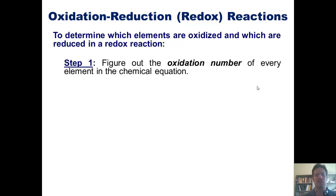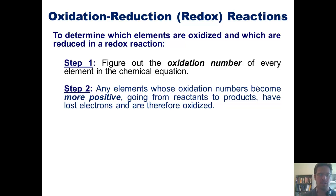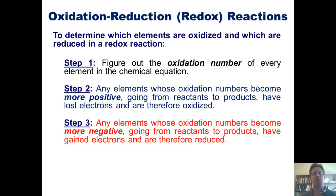One: figure out the oxidation number of every element in the chemical reaction. Two: any elements whose oxidation numbers become more positive going from left to right have lost electrons and are therefore oxidized. Three: any elements whose oxidation numbers have become more negative going from left to right have gained electrons and therefore have gotten reduced.